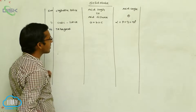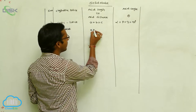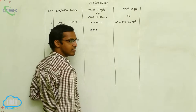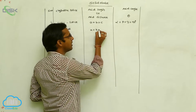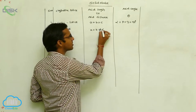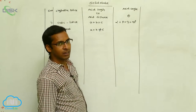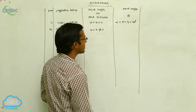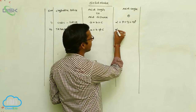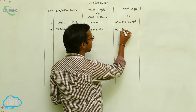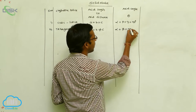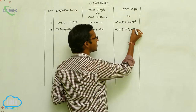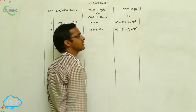Next is the tetragonal lattice. In tetragonal, a equals b, but b is not equal to c — so a equals b, not equal to c. The axial angles remain the same: alpha equals beta equals gamma equals 90 degrees.